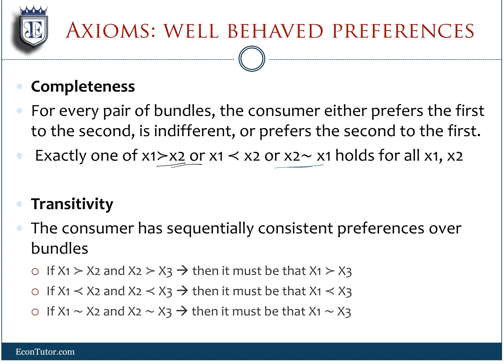Secondly, we have transitivity, which means that your preferences are consistent. So for instance, if you like x1 more than x2, and x2 more than x3, then it must mean that you like x1 more than x3. Like if you like an apple more than a banana, and you like a banana more than an orange, then that must mean you like apple more than an orange. You can't say sometimes I like orange more than apple, because that would be inconsistent. That's what transitivity means.